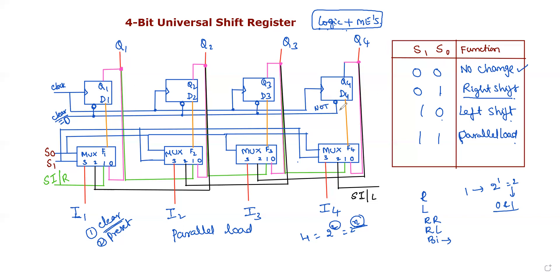The clock pulse is also shared across all flip-flops, so we use a synchronous clock. The flip-flops perform their operations based on what the multiplexer selects. When we select the multiplexer, the first operation is no-change, the next is right-shifting, the next is left-shifting, and the next is parallel load — chosen depending on the selection inputs.